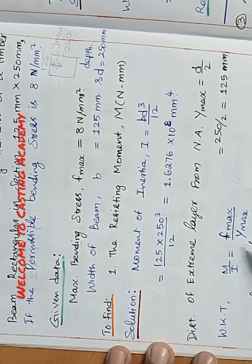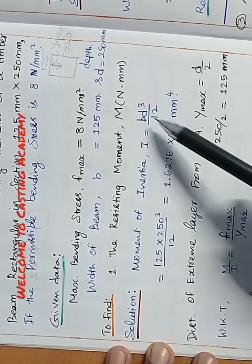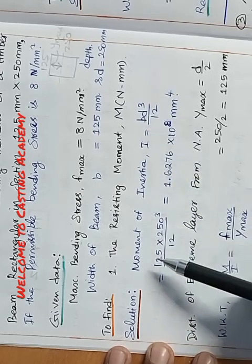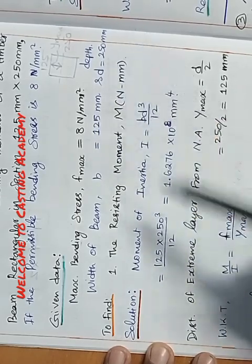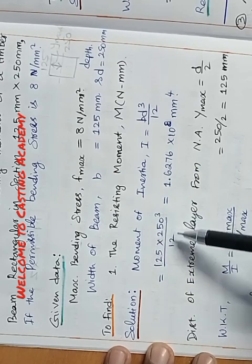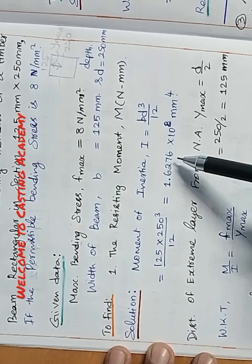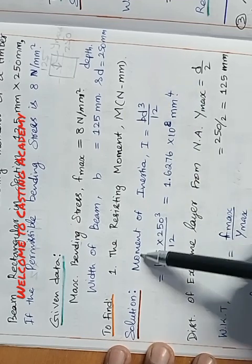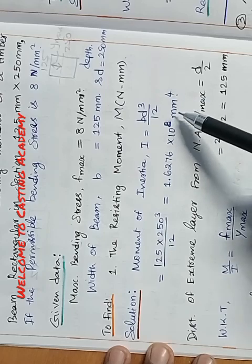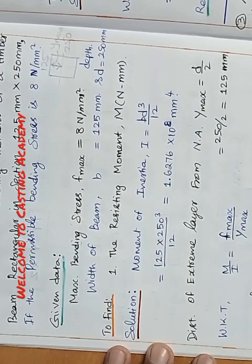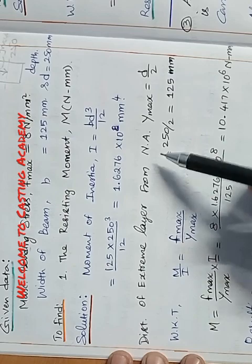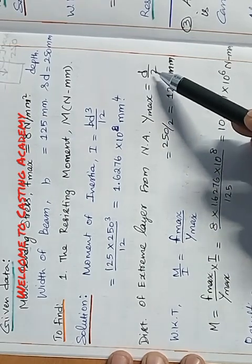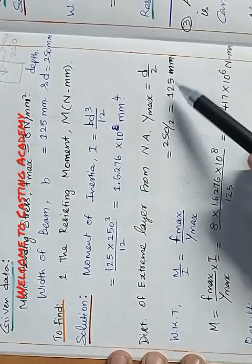From the bending formula, we find the unknown parameters. First, moment of inertia I equals BD³/12. With B equal to 125 mm and D equal to 250 mm: I equals 125 × 250³ divided by 12, giving 1.6276 × 10⁸ mm⁴. The unit for moment of inertia is mm⁴ — be careful about the units. Then, Ymax, the distance of the extreme layer from the neutral axis, equals D/2 = 250/2 = 125 mm.